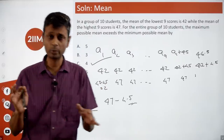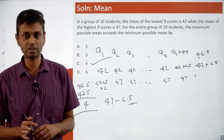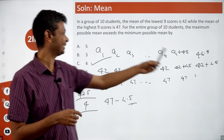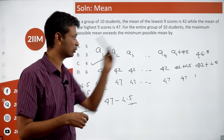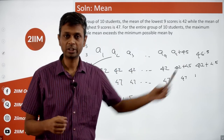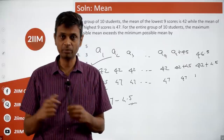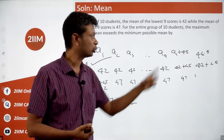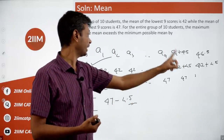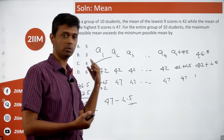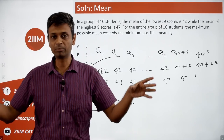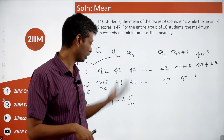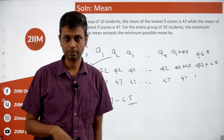First we anchor that A10 = A1 + 45. Then for either extreme, put A1 to A9 equal, or put A2 to A10 equal. Both extremes get discovered, and then you find the minimum and maximum means.